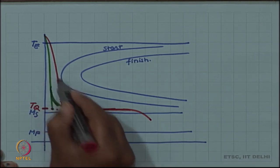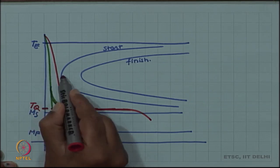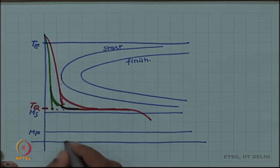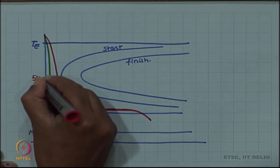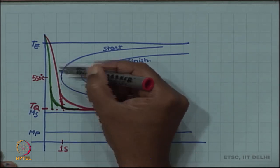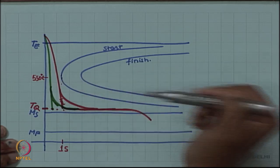Recall that the requirement for quenching to produce martensite was because of this small gate which we had here at the nose. We had only 1 second, this time is about 1 second and the temperature was 550 degree Celsius. In less than 1 second we should cool below 550 degree Celsius to avoid the nose.